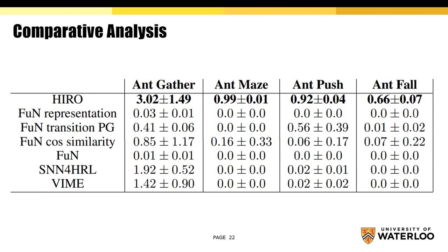Here is a comparative analysis between HIRO and other algorithms. The best policy is obtained in 10 million steps of training, averaged over 10 randomly seeded trials with standard error. Comparisons are done to Feudal Networks, Stochastic Neural Networks for HRL, and Variational Information Maximizing Exploration. Some of these algorithms are problem-specific and were modified for fairer comparison. HIRO completely outperforms all of these algorithms in all four environments tested.